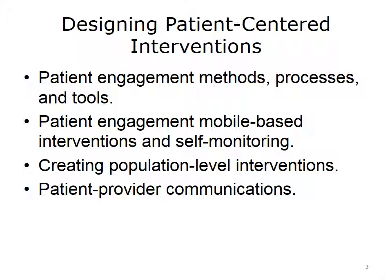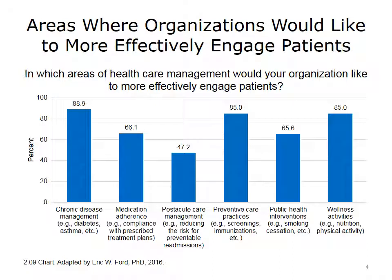The last thing we're seeing a revolution in is patient-provider communications. The internet, emails, patient portals, and personal health records are all improving patient-provider interactions fairly dramatically. An exhibit demonstrates where people are working most actively as of 2013. One area is chronic disease management — diabetes, asthma, chronic obstructive pulmonary disease, etc. These are very serious chronic illnesses that people need to improve on dramatically.